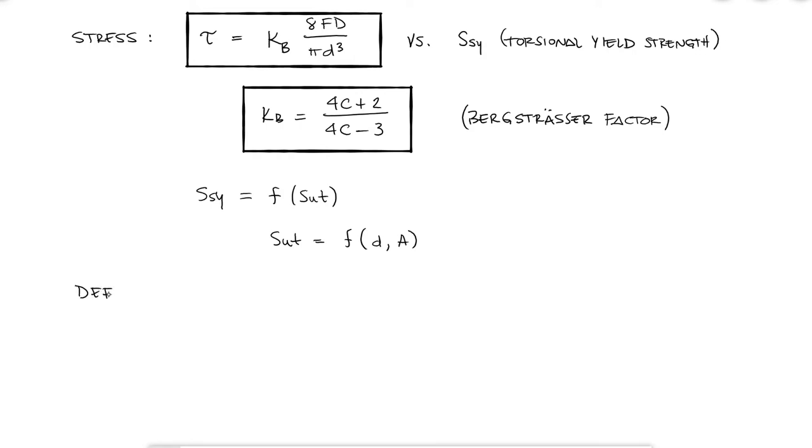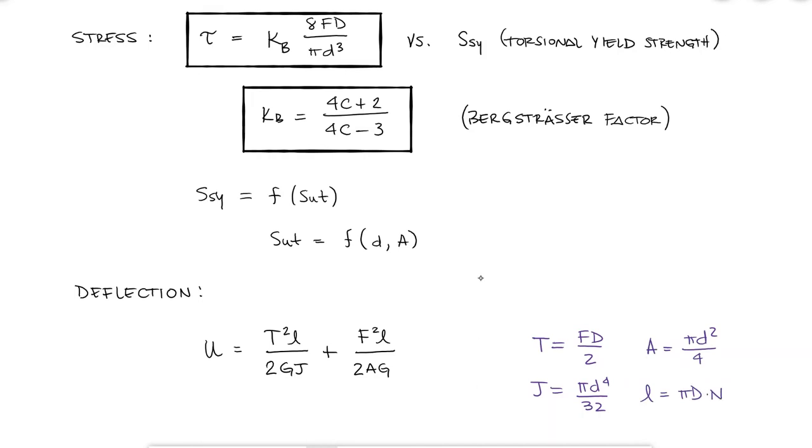Moving on to the deflection analysis of helical springs, we start by looking at the strain energy within the spring when it's being deformed. Since there exists a direct shear force F and a torque T affecting any and every circular element that forms the wire, the strain energy will be that of torsion and direct shear, two of the five types we talked about several videos ago. Substituting variables like T, J, and A, and knowing that the length of the wire is equal to the number N of circumferences, where N is the number of coils, we find an expression for the total strain energy in the spring.